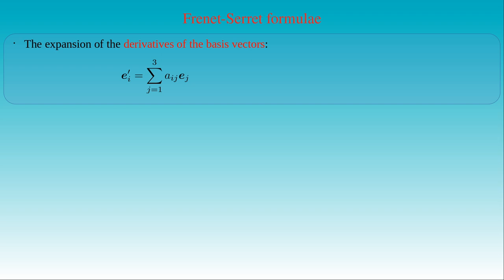For the given matrix elements, we can determine the result of this multiplication. To obtain the derivative of the first basis vector, we multiply the first row of the matrix with the vector of basis vectors, giving kappa times e2 plus alpha times e3. The derivative of the second basis vector is given by the second row: minus kappa times e1, plus tau times e3. The derivative of the third basis vector, from the third row, gives minus alpha times e1, minus tau times e2.